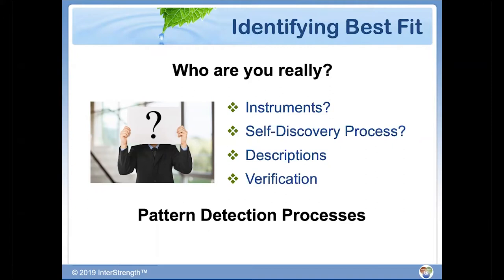The self-discovery process has error rate too, because I may use an example of something that you have a pattern in, and you may say, 'Oh, that's not me.' So that gives you some data. Descriptions give you some data. And verification.